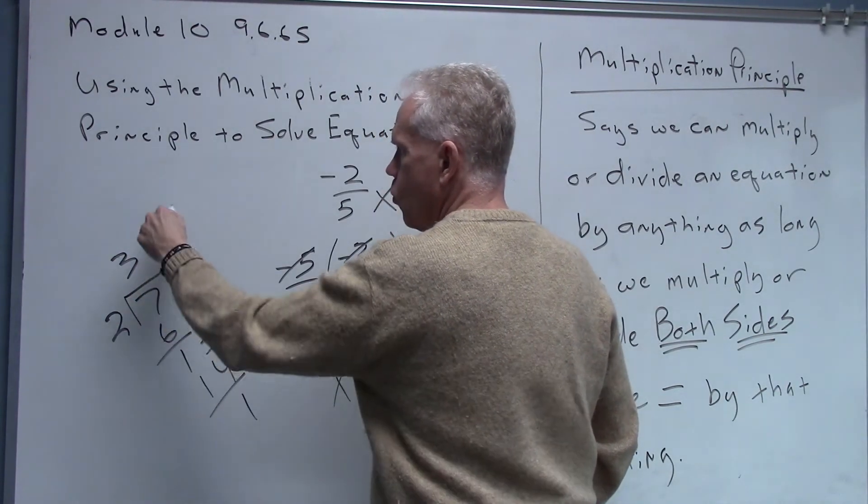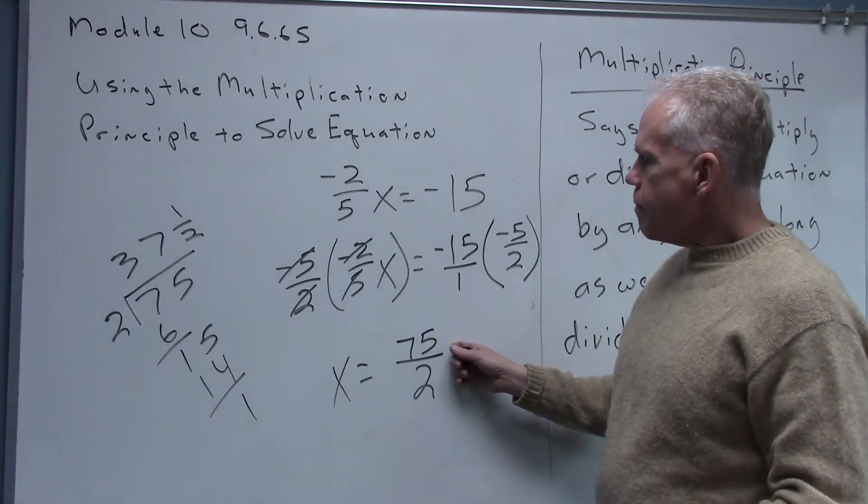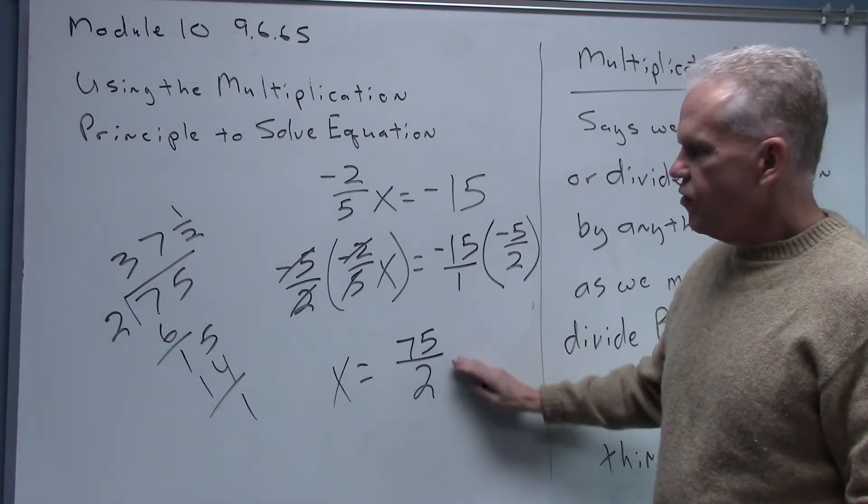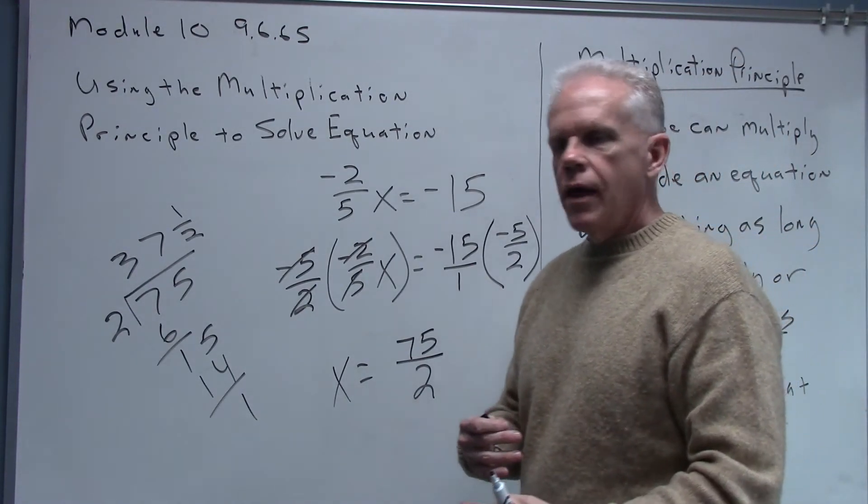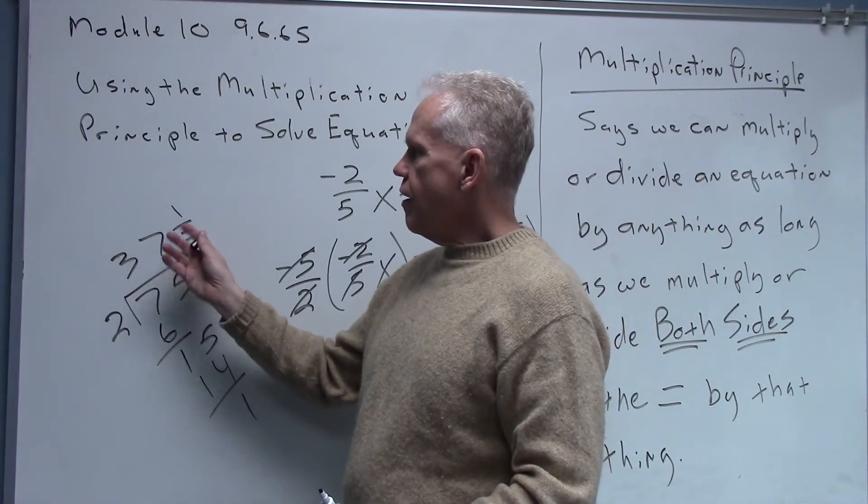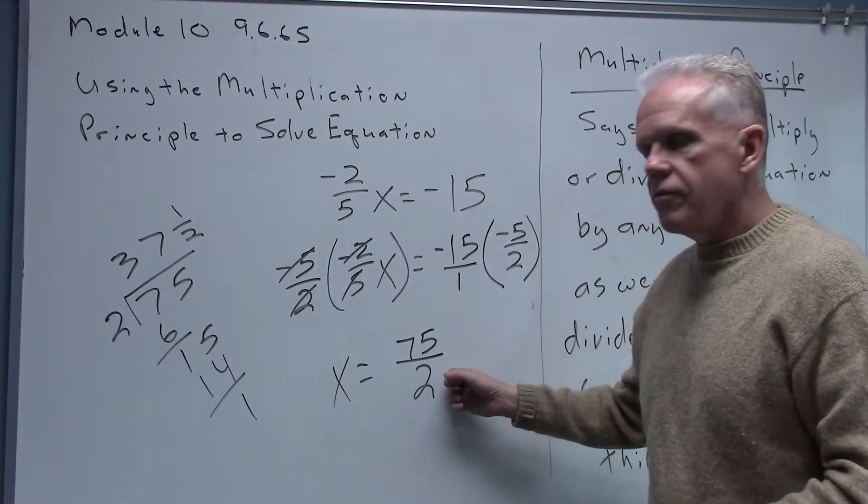So if you list your answer as an improper fraction in simplest form it'll be seventy-five over two. If they ask for a mixed number as an answer then it'd be thirty-seven and a half. If they ask for a decimal you could just pop in seventy-five divided by two in your calculator and you get thirty-seven point five.